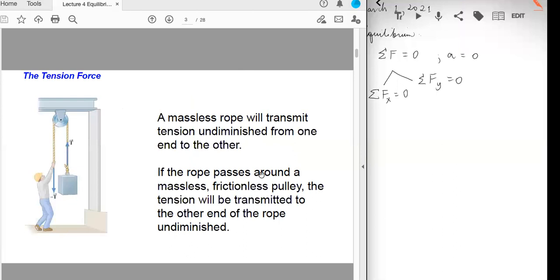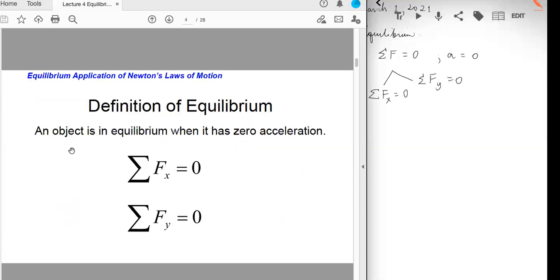A massless rope will transmit tension undiminished from one end to the other. So whatever force you apply here, it will also be experienced at this side. If the rope passes around a massless, frictionless pulley, the tension will be transmitted to the other end of the rope undiminished. So whatever the tension you apply here should be the same as the tension you apply here.